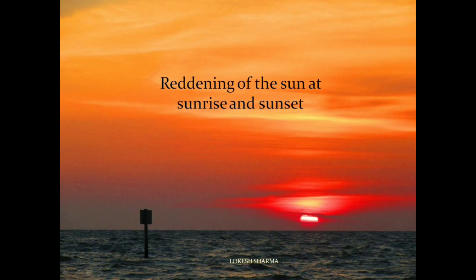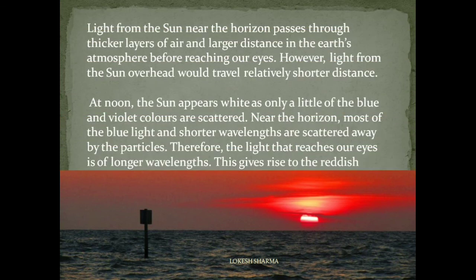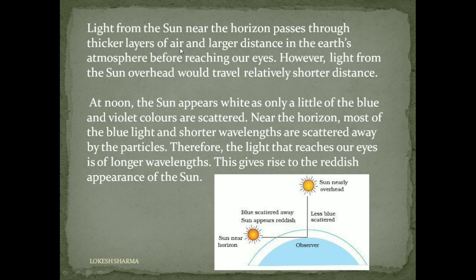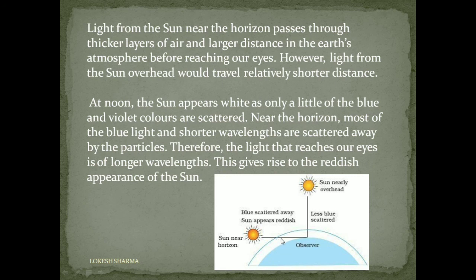What is the cause of reddening of the sun at sunrise and sunset? Light from the sun near the horizon passes through a thicker layer of air and a larger distance in the Earth's atmosphere before reaching our eyes, while light from the sun overhead travels a relatively shorter distance. At noon, the sun appears white as only a little of the blue and violet colors are scattered. Near the horizon, most of the blue light and shorter wavelengths are scattered away by particles, so the light that reaches our eyes is of longer wavelength — giving rise to the reddish appearance of the sun. At sunset/sunrise, the distance travelled in the atmosphere is about four times greater, so most colors except red are scattered away and only red light reaches the viewer's eye.